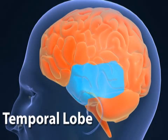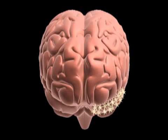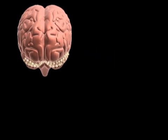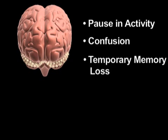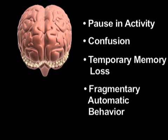The temporal lobe is the part of the brain most prone to develop seizures. It is responsible for many complex activities, including the formation and retrieval of memories and the control of emotional states. If a temporal lobe seizure spreads to both temporal regions, then the manifestation of the seizures increases, with a pause in ongoing activities, confusion, temporary memory loss, and fragmentary automatic robot-like behaviors. This type of seizure is called a complex partial seizure, and it is the most common type of seizure in adults.